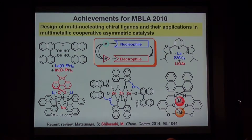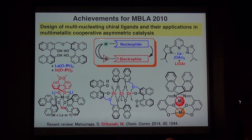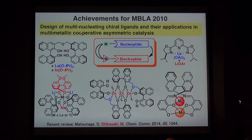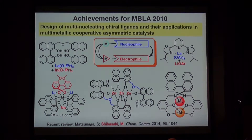This is the summary slide of the MBLA 2010. At that time, I was working on the design of multi-nucleating chiral ligands and their applications in multi-metallic — bi-metallic, tri-metallic, or multi-metallic — cooperative asymmetric catalysis. By using the intramolecular cooperative fashions, I can successfully control the positions of nucleophiles and electrophiles precisely, and we achieved high enantio- and diastereoselectivities in a variety of reactions.